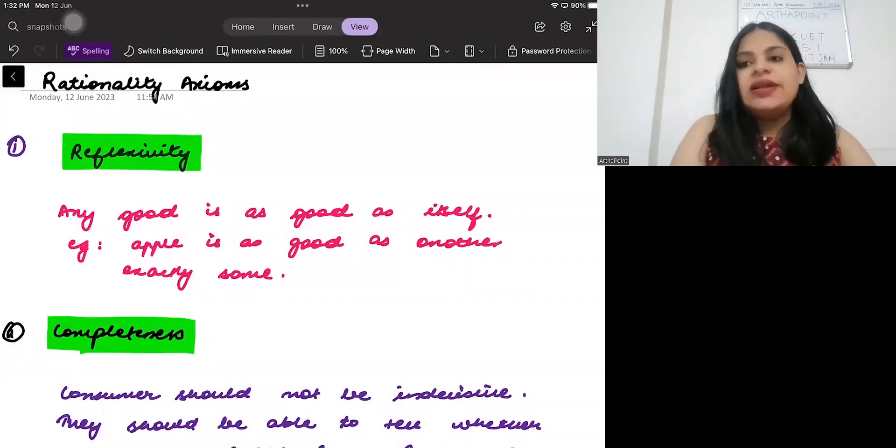Rationality axioms. Let us in this video discuss what are the different rationality axioms. What is a rational consumer? A rational consumer is any consumer who thinks rationally. What do I mean by thinking rationally? Thinking rationally means that you give priority to your consumption over other person's consumption. You want to maximize your own utility.